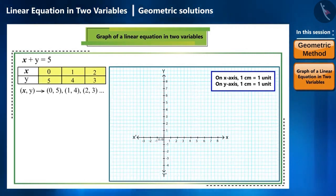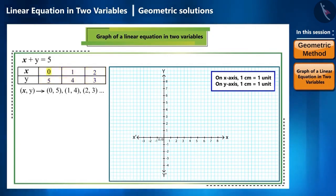Let us plot these three points. The point (0, 5) is plotted here. The point (1, 4) is plotted here. You can also show the point by drawing a perpendicular from point 1 on the x axis and a straight line from point 4 on the y axis. And the last point (2, 3) will be here.